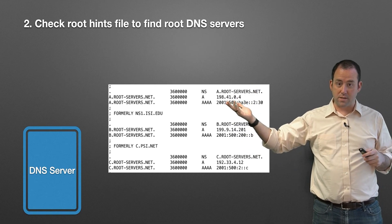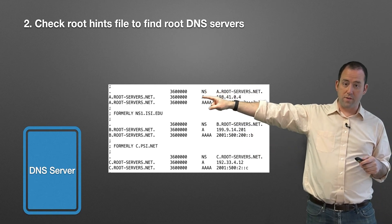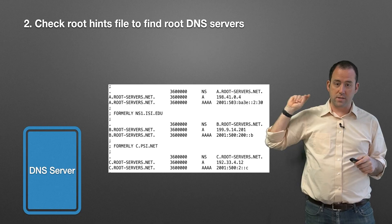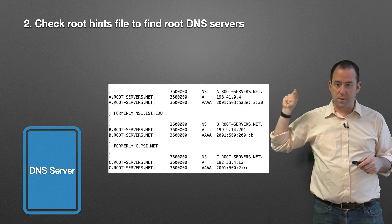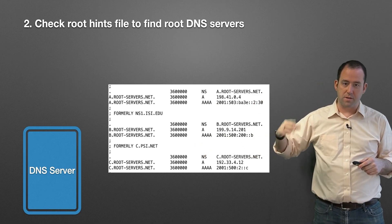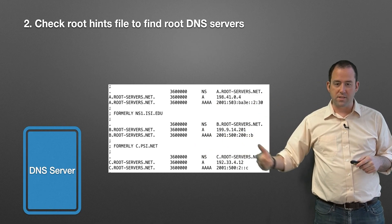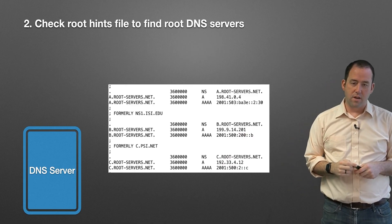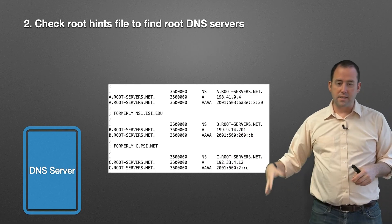What are the IP addresses? We've got a.rootservers.net — here's the IP address. b.rootservers.net — here's the IP address. And we have both IPv4 and IPv6 addresses for those, continuing through c, d, e, f, g and more root servers.